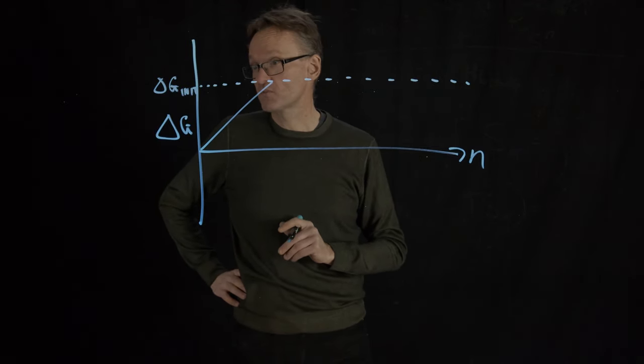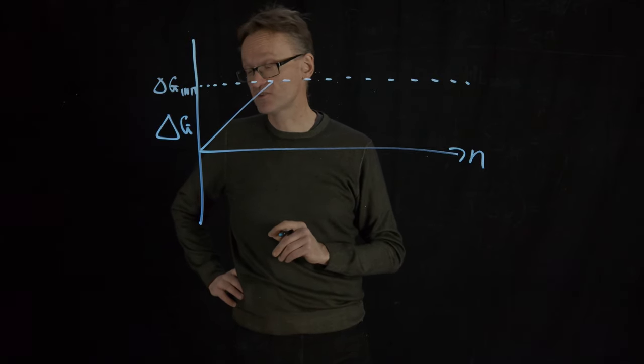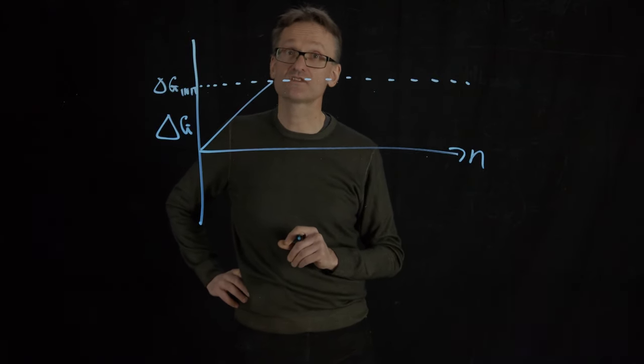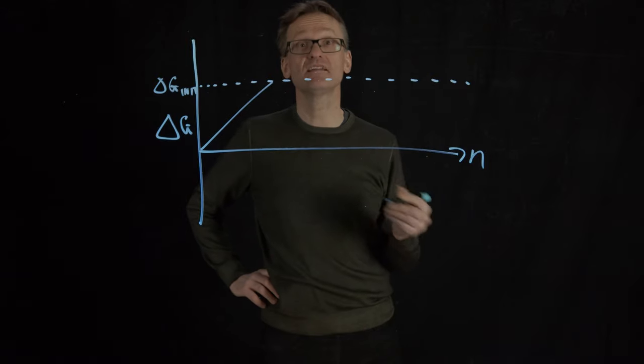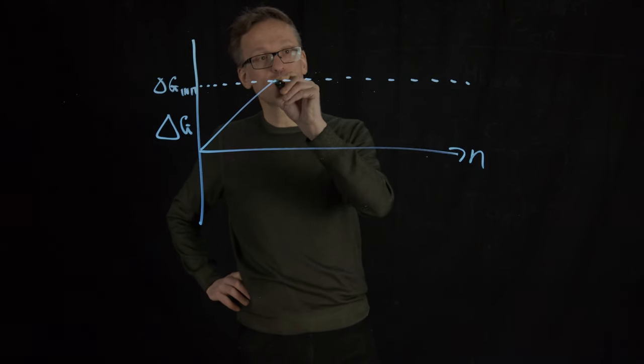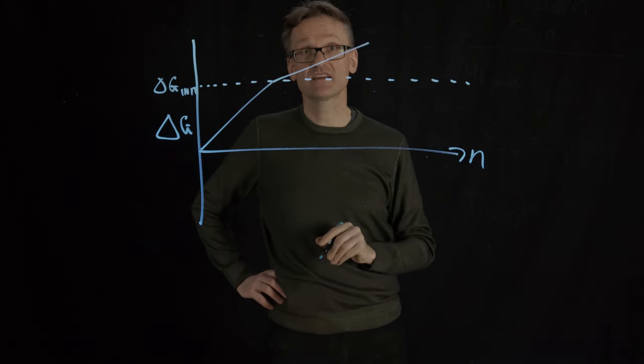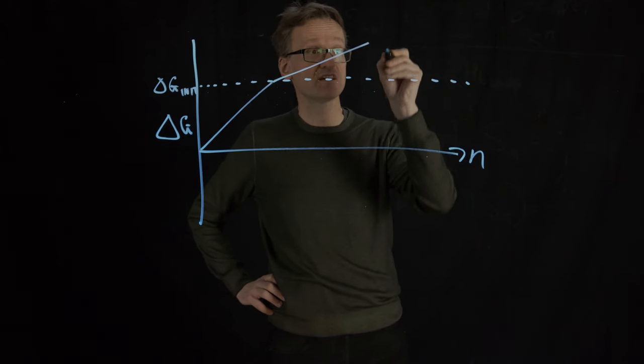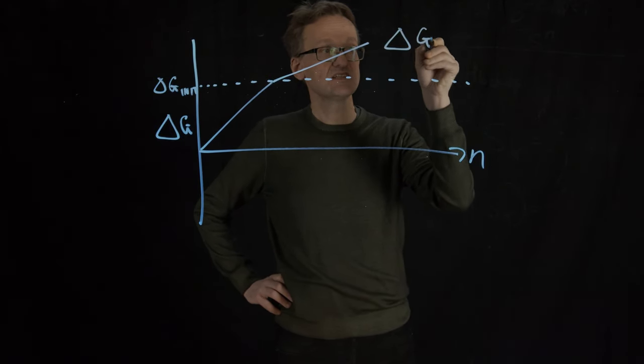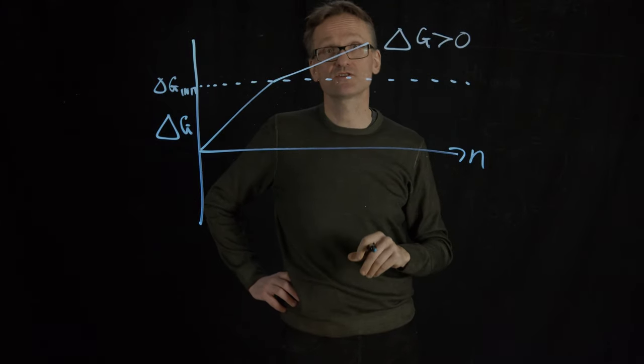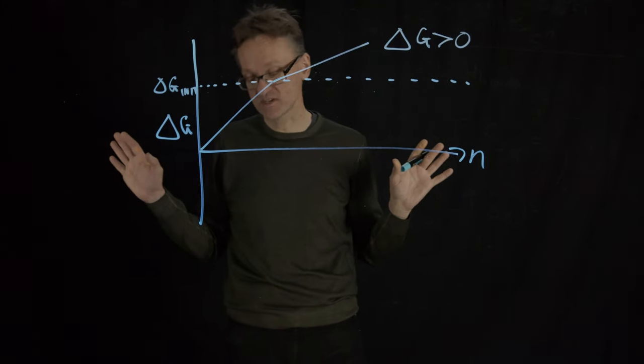But then there are three possible scenarios. First, assuming that you had a long sequence that were just prolins. In this case, they would hate to be in helix. So I would always pay by extending it. The more residues I try to put in a helix, the worse it would be. So in this case, delta G would always be larger than zero. We will never see any trace of a helix.